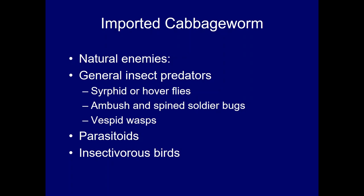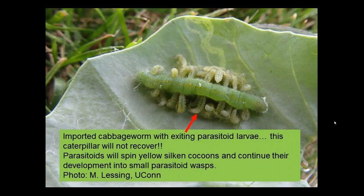Parasitoids are very important in terms of the control they can provide. One example shown is a mature imported cabbage worm larva that is essentially dead as larvae of the Cotesia parasitoid exit — these parasitoid larvae developed inside the caterpillar and are all emerging at the same time. This is one example of a parasitoid that was released long ago for management of this pest.